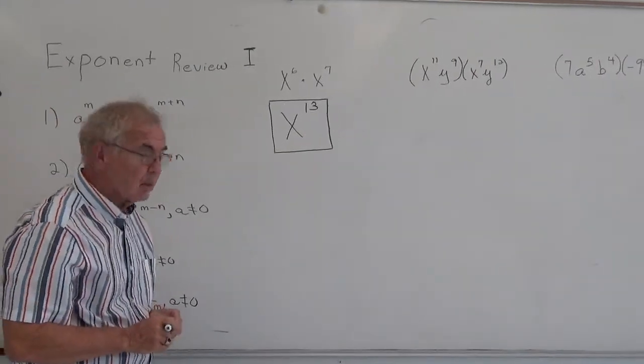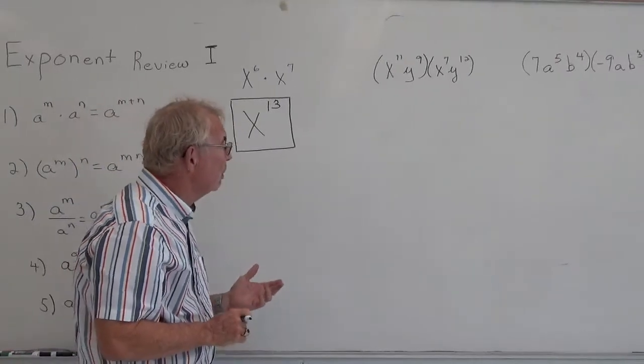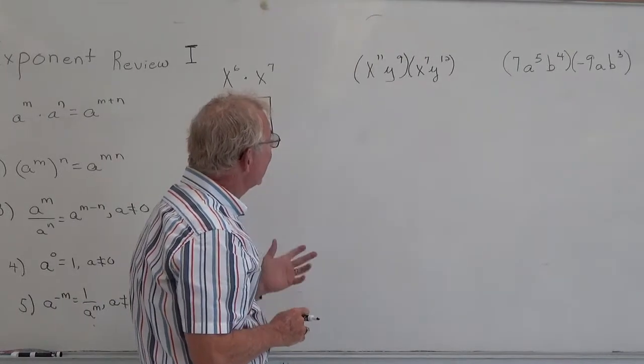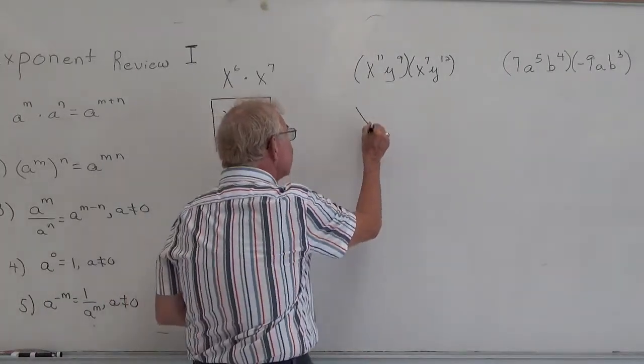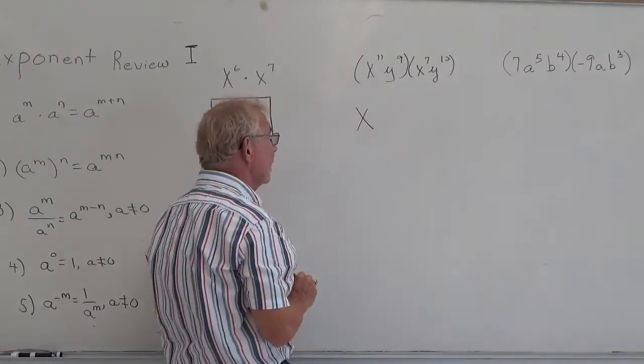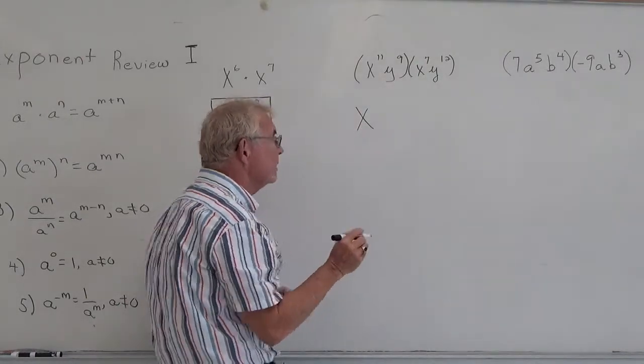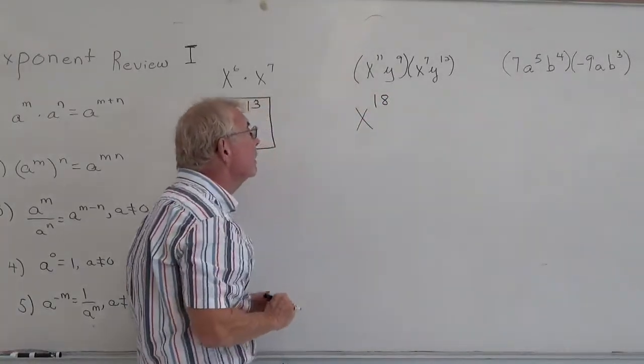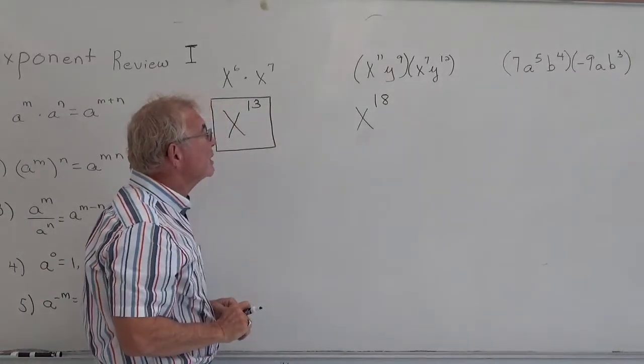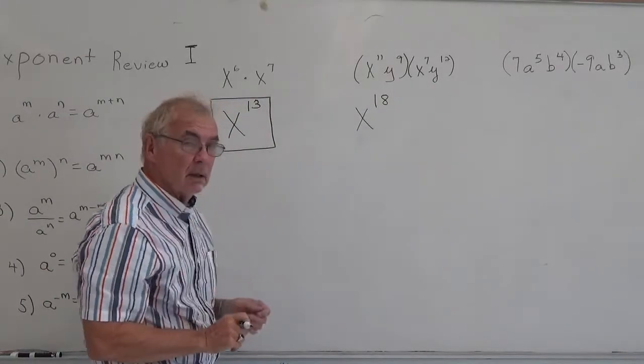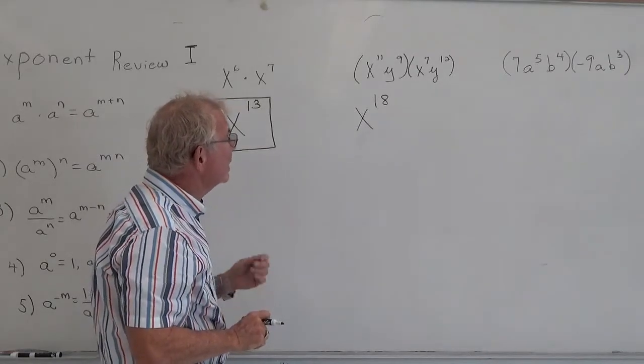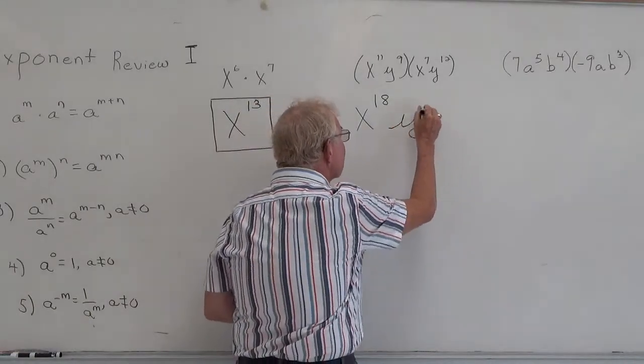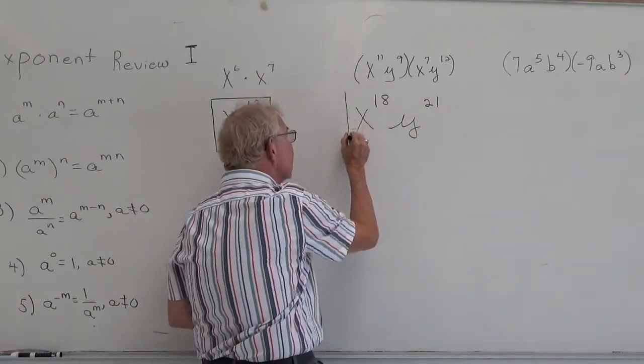Our second example is very similar, rule one, but in this case we have two variables. So you look at the base x, one exponent's 11, one exponent's 7, so if you add 7 to 11, you'll get x to the 18th. And then you look at the base y's, you have one base 9, one base 12, so if you add 9 to 12, you'll get the exponent of 21, and that's our answer.